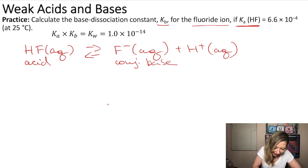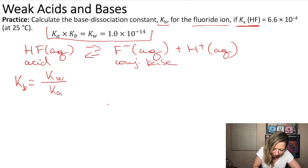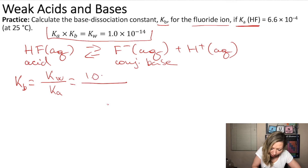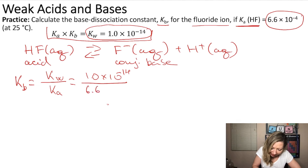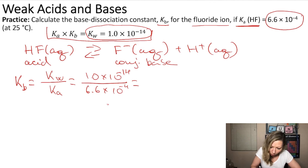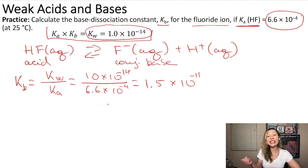Now we need to calculate K sub B. From this expression, K sub B equals K sub W divided by K sub A. Plugging in the values: 1.0 times 10 to the negative 14 divided by 6.6 times 10 to the negative 4th. If you do this calculation, you get 1.5 times 10 to the negative 11. So that is our K sub B for the fluoride ion.